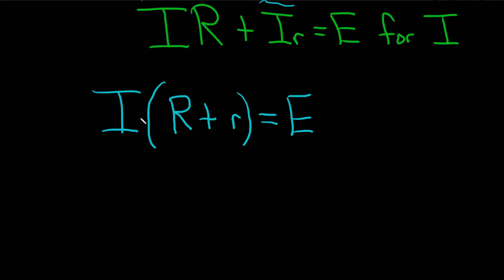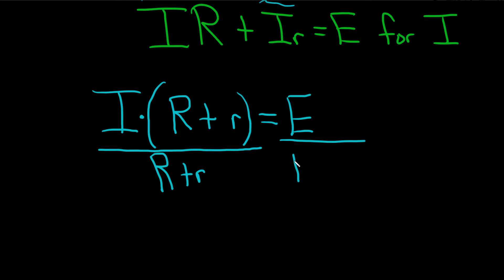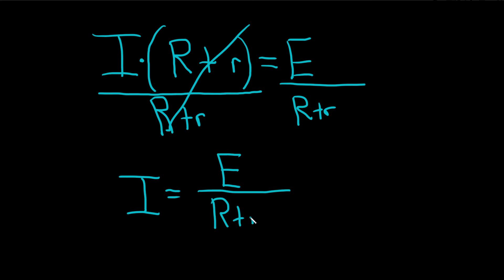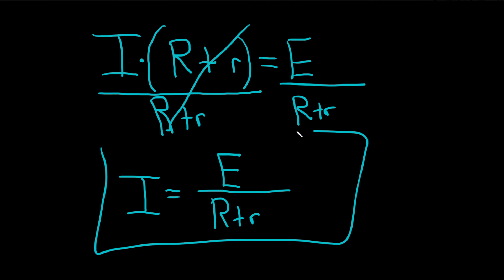Now we're looking for I. It's being multiplied by all of this, so to undo the multiplication we use division. You draw the line all the way across and divide by big R plus little r. Divide by big R plus little r. These cancel because they're on top of each other. So I equals E over big R plus little r. And that would be the final answer. I hope this video has been helpful.